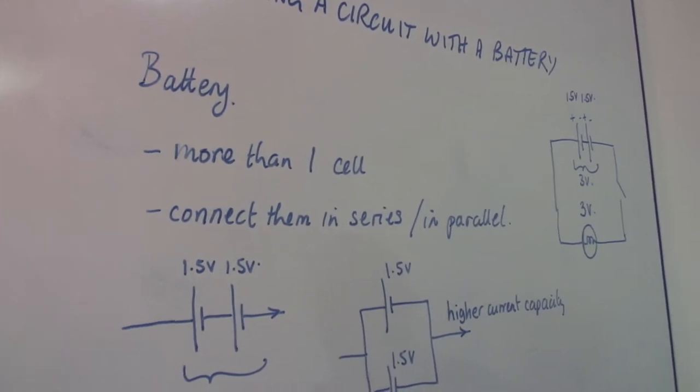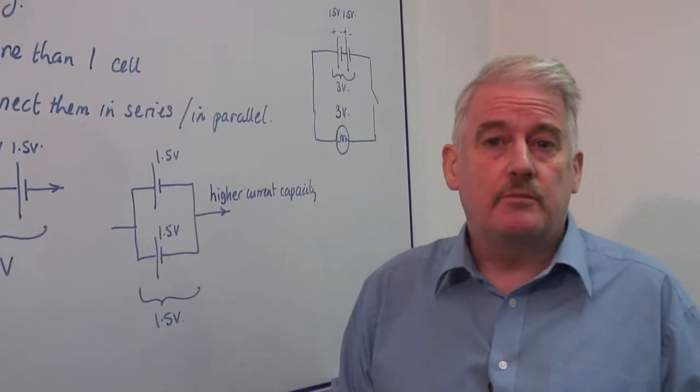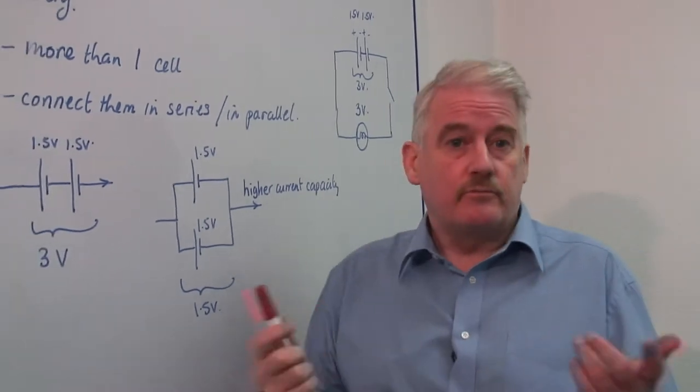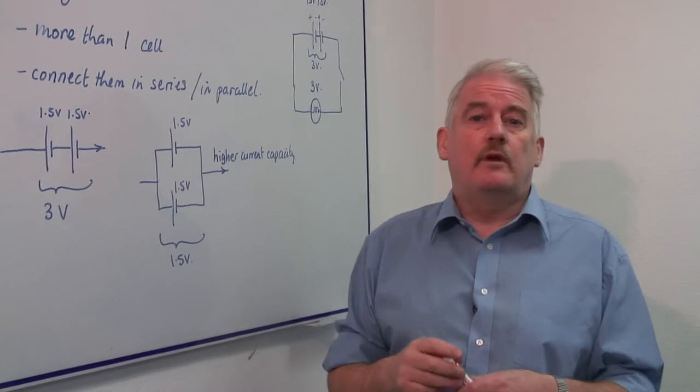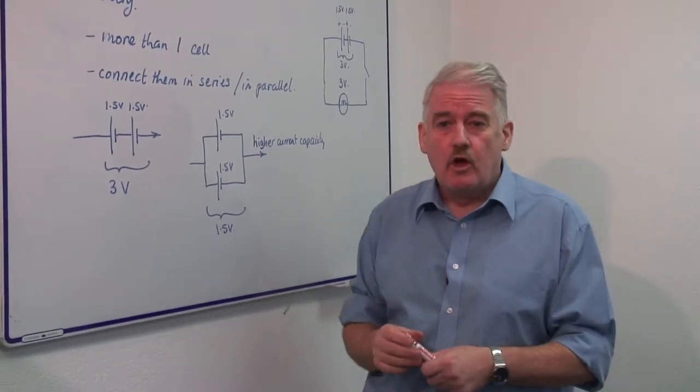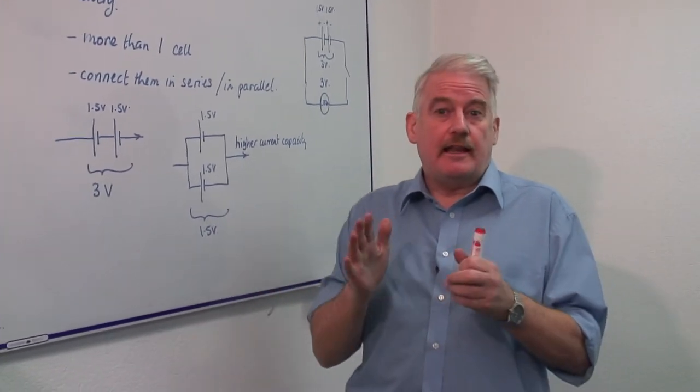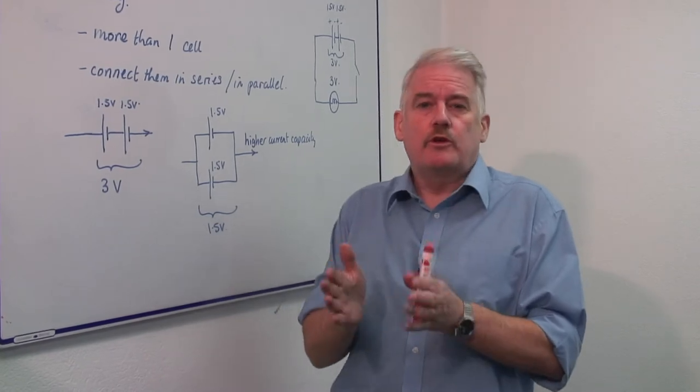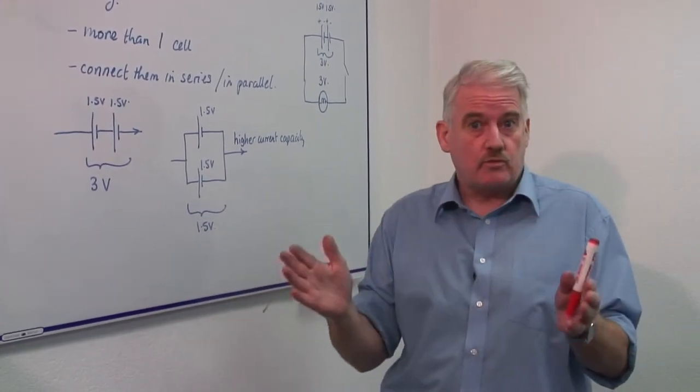It's very important to be able to change the voltage in a circuit to drive different components, and very often we want higher voltages. For example, in a car we have six cells in a battery to give us 12 volts. We cannot have a single cell which gives us more than 2 volts. The lead acid cell that we use in a car is a 2 volt cell, so six of those gives us 12 volts.